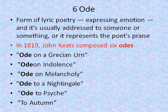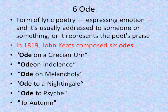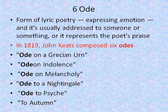Ode is basically the deep feeling expression of a writer's thoughts about a particular place or subject. Ode is a form of poetry that expresses emotions and is usually addressed to someone, something, or some place. It represents the poet's feelings and musings on that person, place, or thing. In 1819, John Keats composed six odes which are still among his most famous: 'Ode on a Grecian Urn,' 'Ode on Indolence,' 'Ode on Melancholy,' 'Ode to a Nightingale,' 'Ode to Psyche,' and 'Ode to Autumn.'